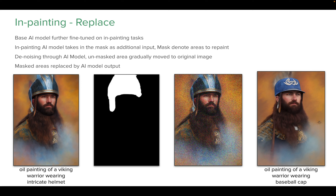That's where in-painting comes in. Apart from the image-to-image inputs, in-painting also takes a mask. This mask outlines the section of the image where we want to make edits. When the image comes out, only the masked portion changes — the rest remains the same.